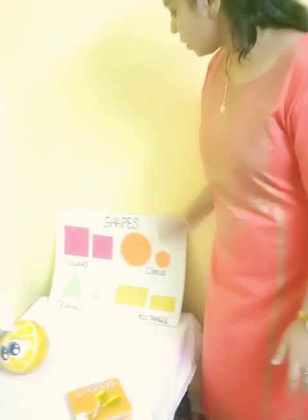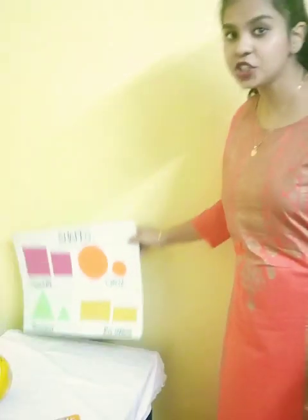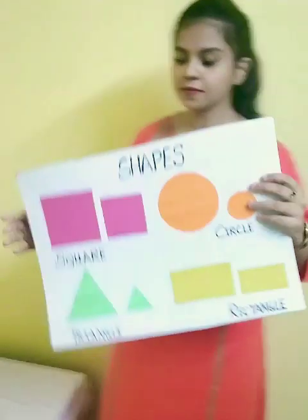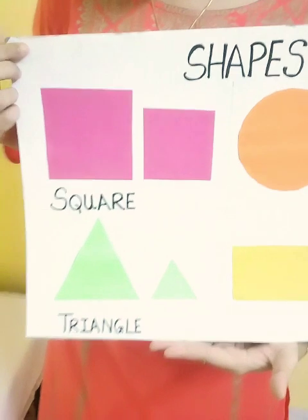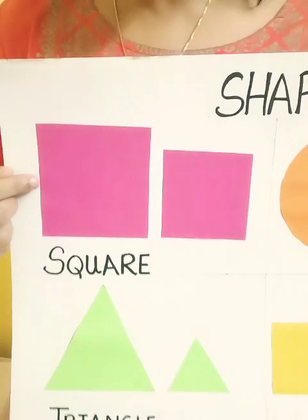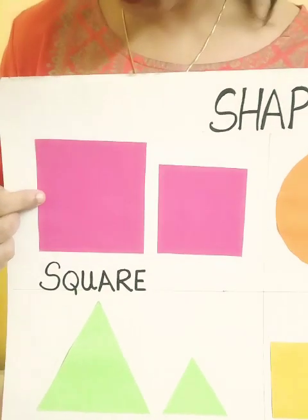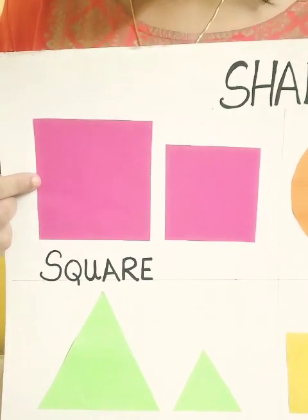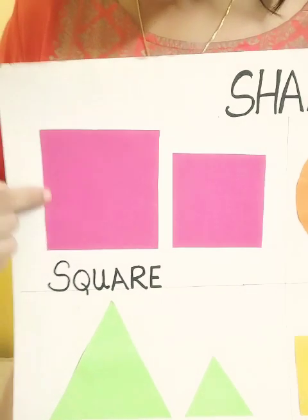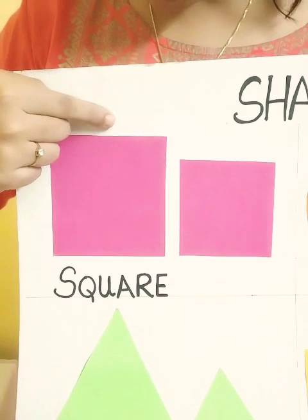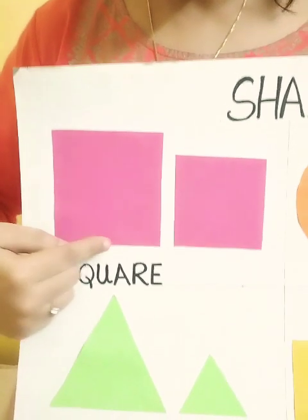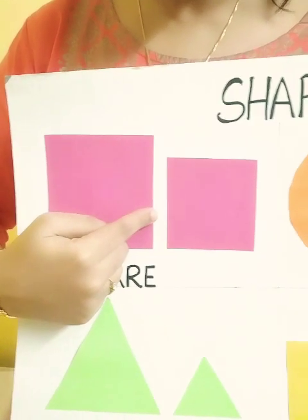Today we are going to say hi to our four basic shapes. Can you all see this? This is a square and the square has four equal sides. Let's count: one, two, three and four.